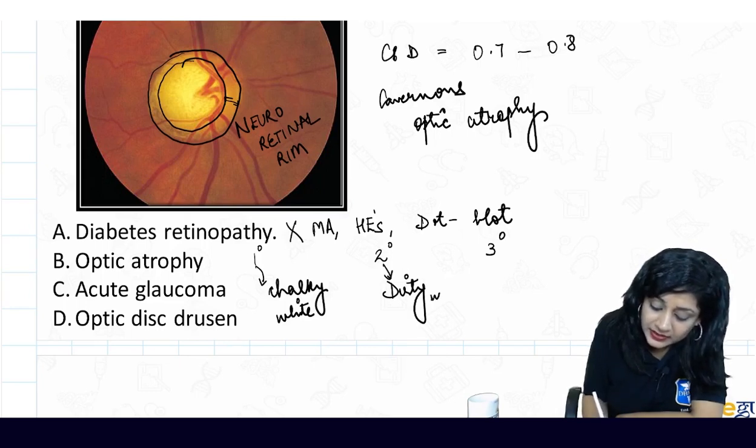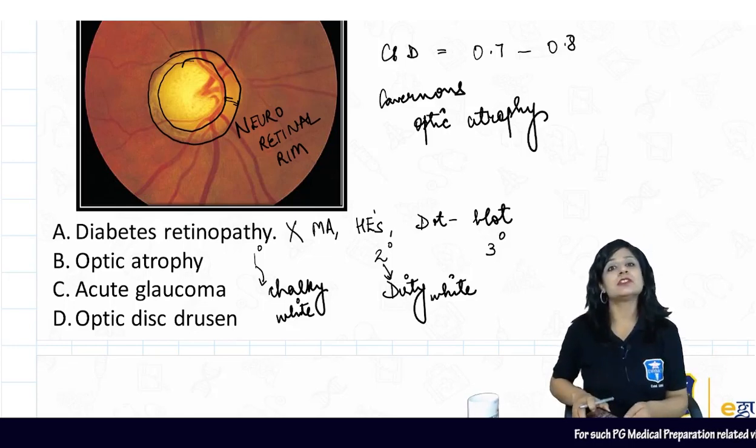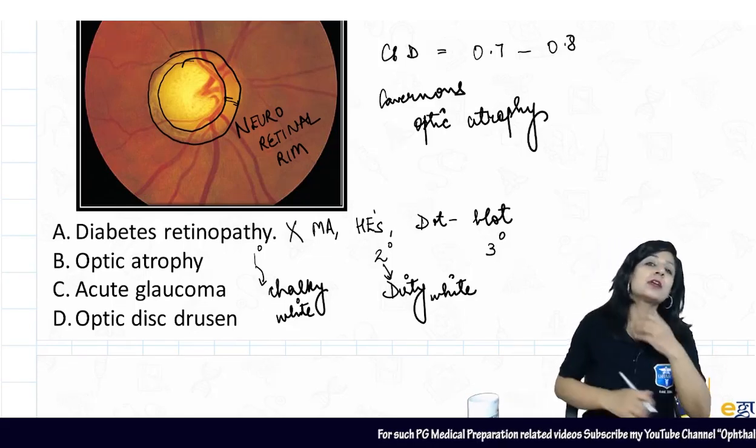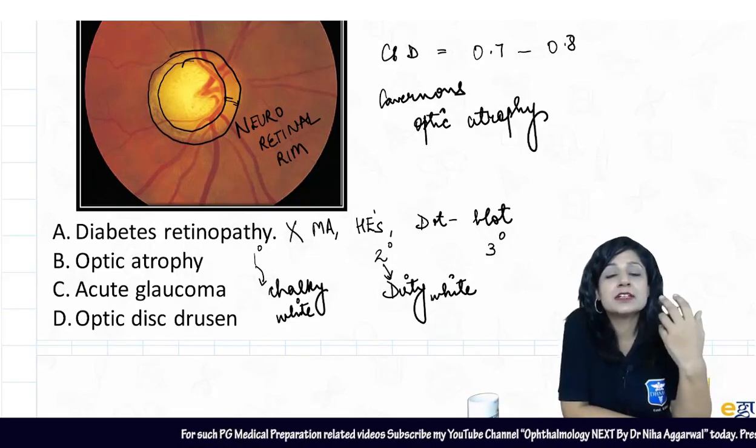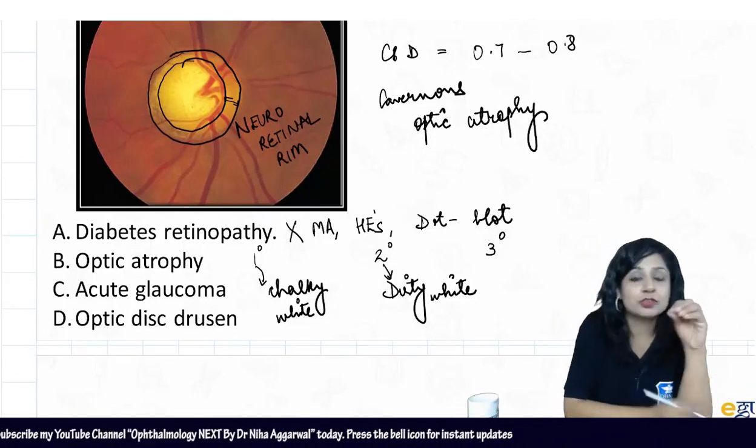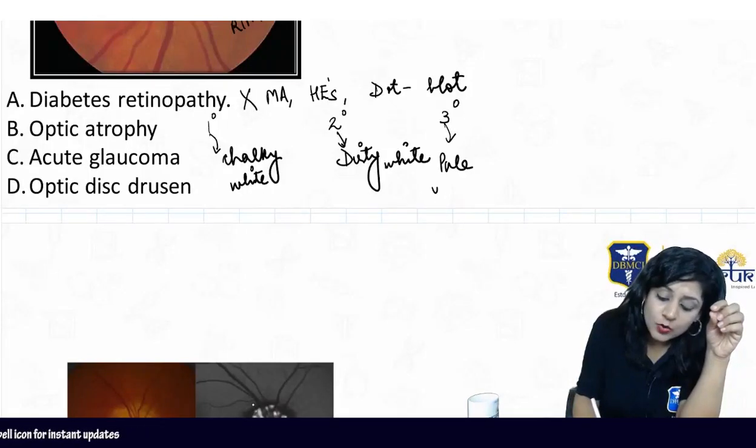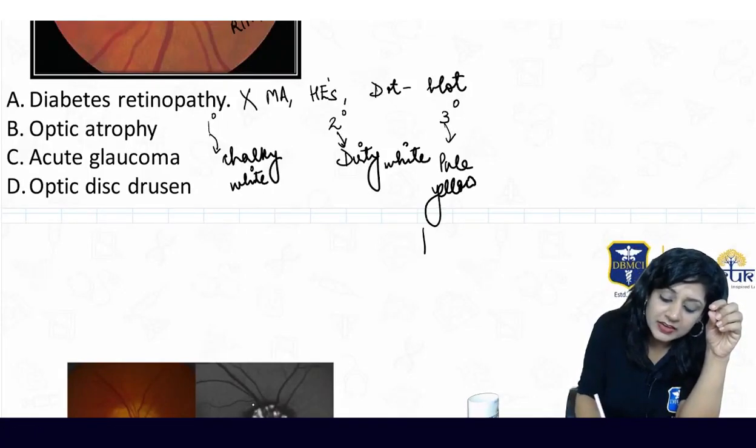And in the dirty white, you will get the changes which are pertinent to the optic disc because it is actually the secondary, which is taking place after the optic disc edema. And then we have got the tertiary. In the tertiary, we will have the pale yellow waxy optic disc like we get in cases of retinitis pigmentosa.